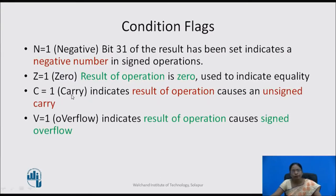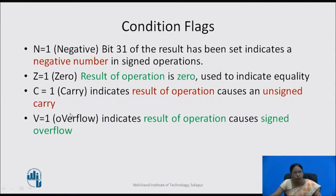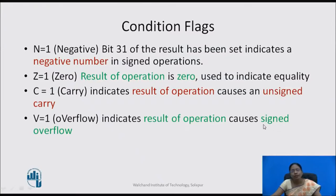C is the carry flag. When C equals 1, it indicates the result of the operation causes an unsigned carry. V is the overflow flag — indicated as V, not O. When V equals 1, it indicates the result of the operation causes a signed overflow. The difference: C indicates an unsigned carry, while V indicates a signed overflow.